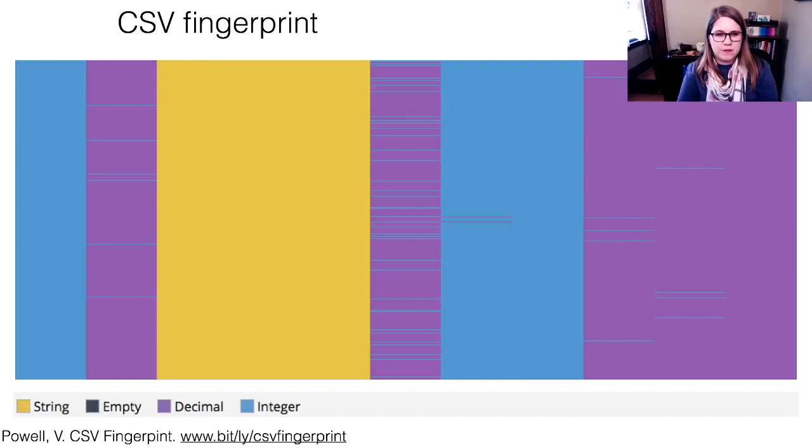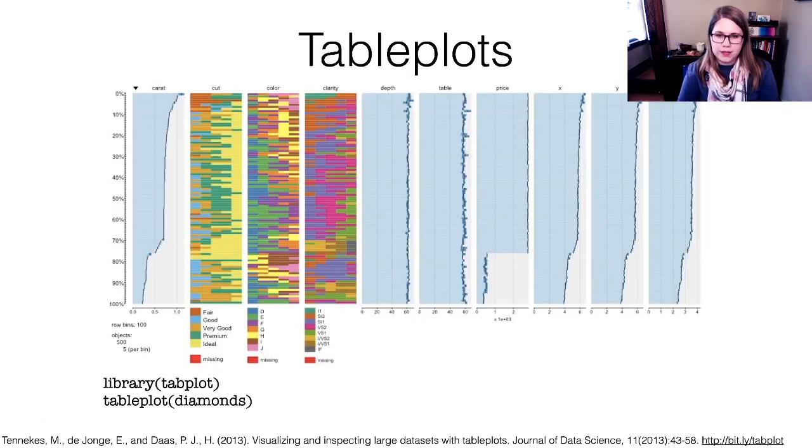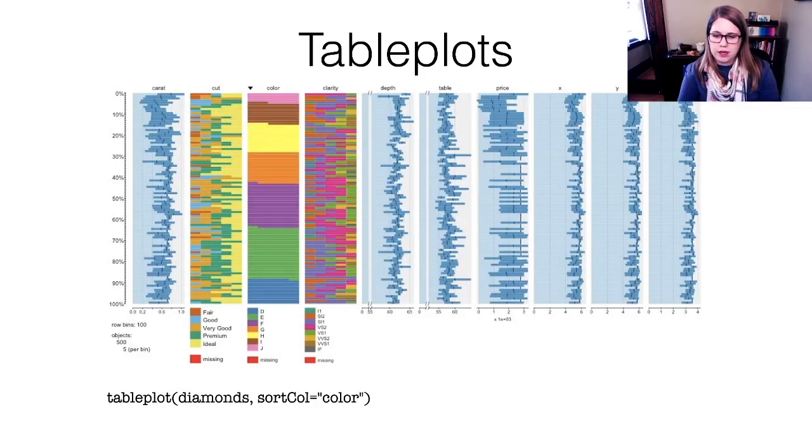I love the CSV fingerprint. This is an idea by Victor Powell, of looking at an entire data set to see where there is maybe missing data, different data types. And it lets you look at an overview of a whole data set. A similar idea in R would be table plots. So this is from the tabplot package. This shows you kind of a density of one variable and then the distribution of all the other variables along. So you might be able to see relationships between many variables at once.